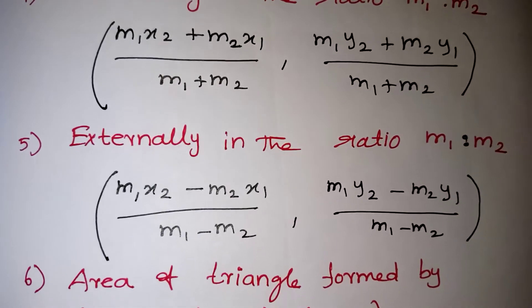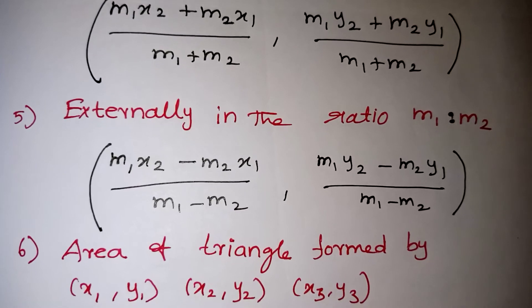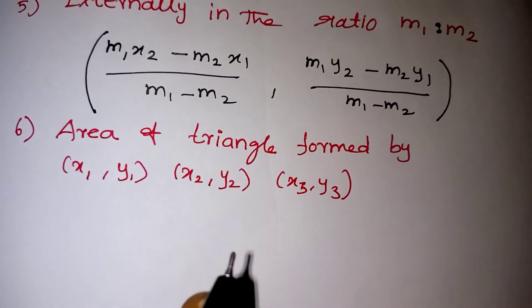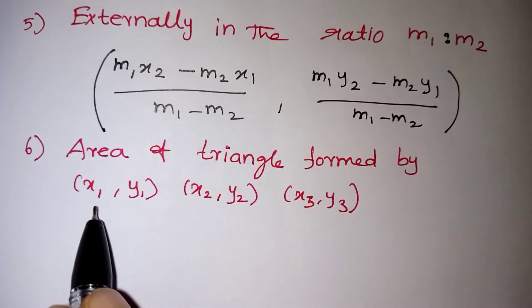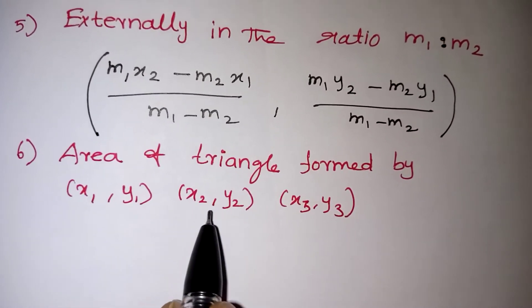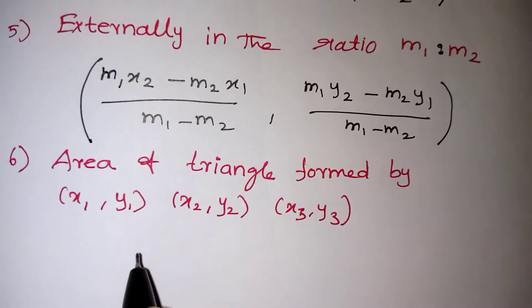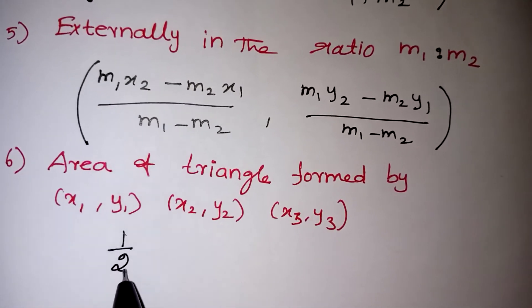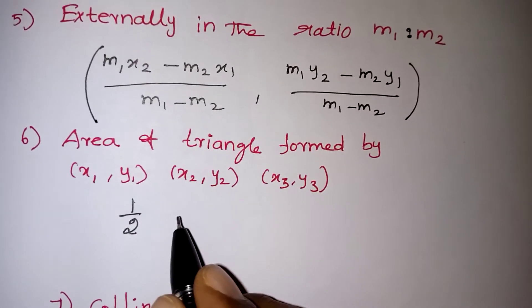Next, we are going to learn area of a triangle formed by 3 points. 3 points are given to you, we have to find the area of the particular triangle. Now, the point should be taken as first point is x1, y1, second point is x2, y2 and third point is x3, y3. Actually, your formula will be half into, the formula will be looking big. It is easy to be done.